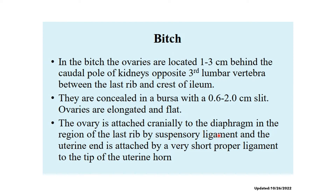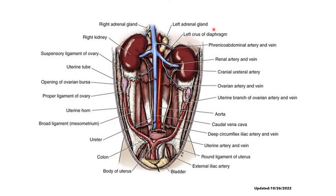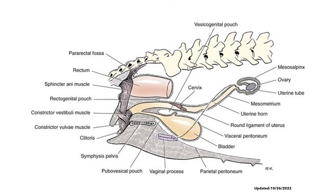These are the ligaments that support the ovary: the suspensory ligament and the proper ligament of the ovary. This diagram shows the location of the ovaries of a dog. For both dogs and cats, the ovaries are located caudal to the kidneys. We can see the ovary, the opening or slit of the ovarian bursa, the kidney, and the ligaments — including the mesovarium and the proper ligament of the ovary.